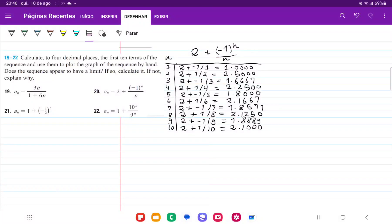So for number 20, we are going to take this sequence right here, a_n is equal to 2 plus minus 1 to the power of n over n, and then it's asking us to calculate to 4 decimal places the first 10 terms of the sequence.